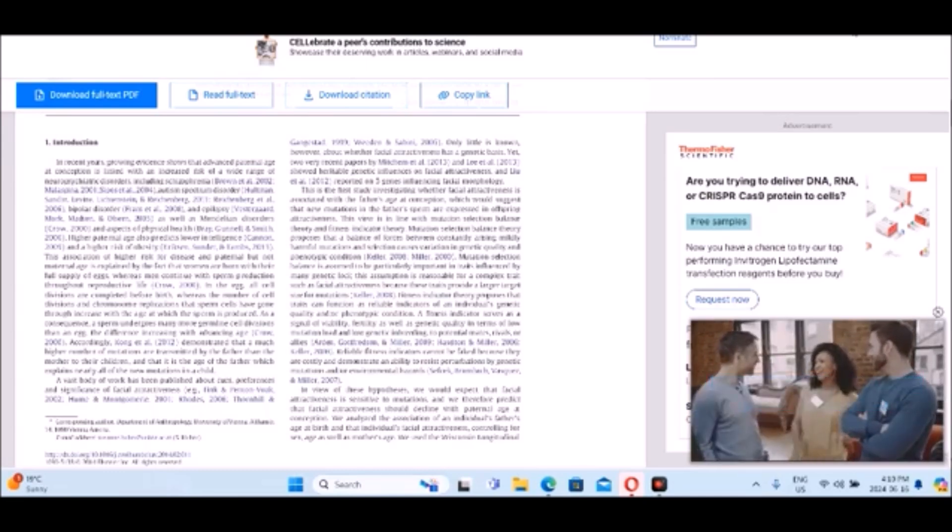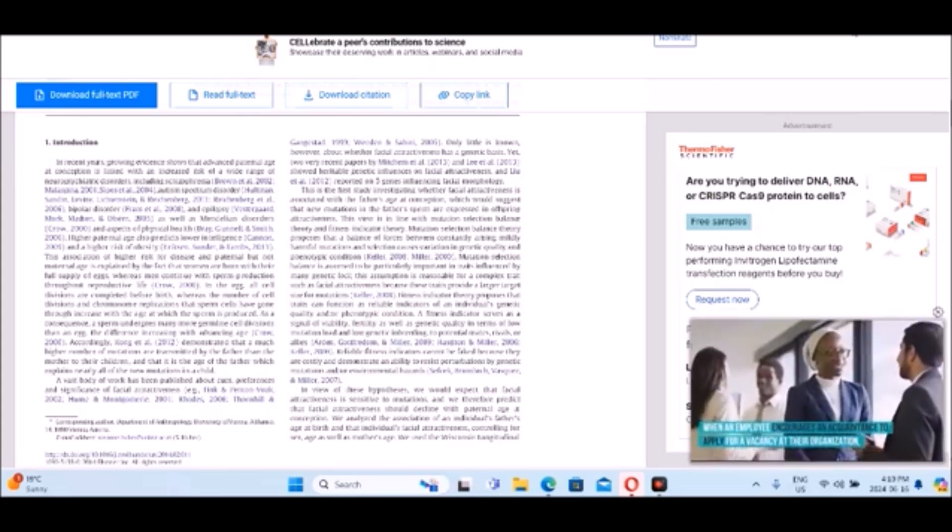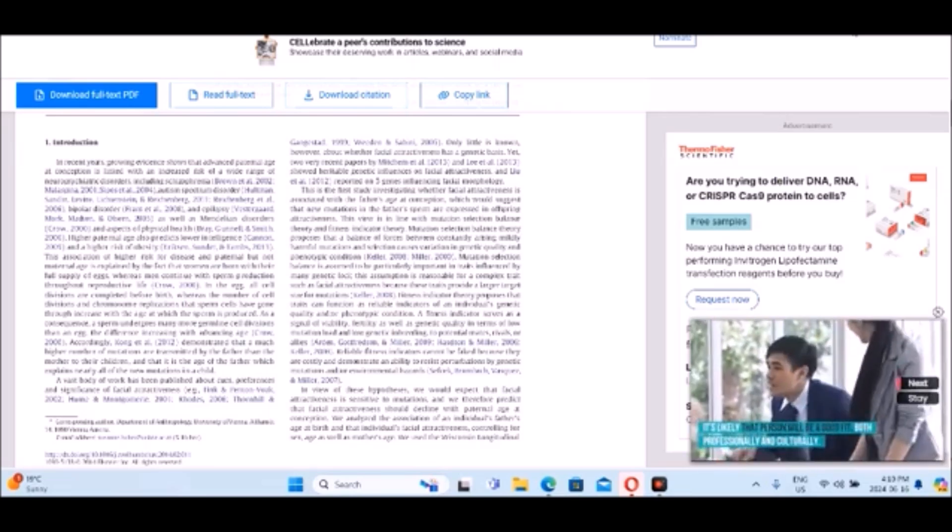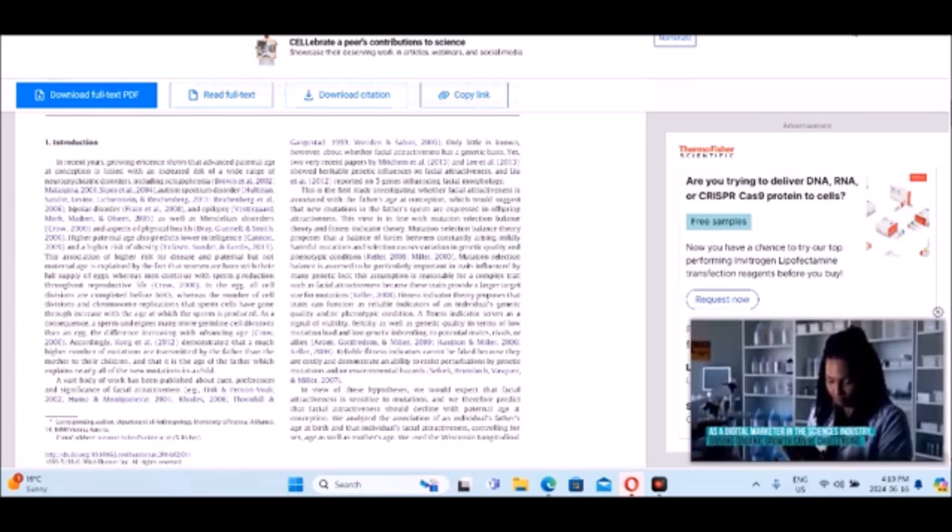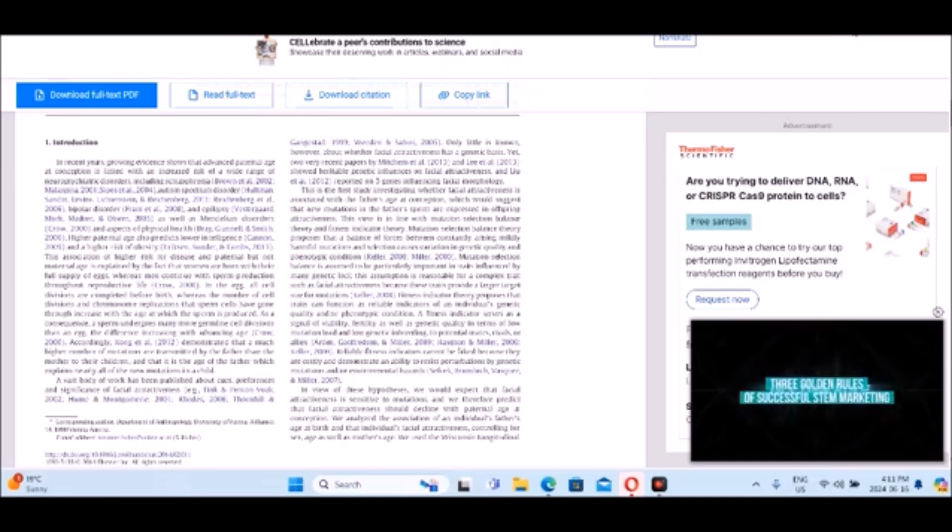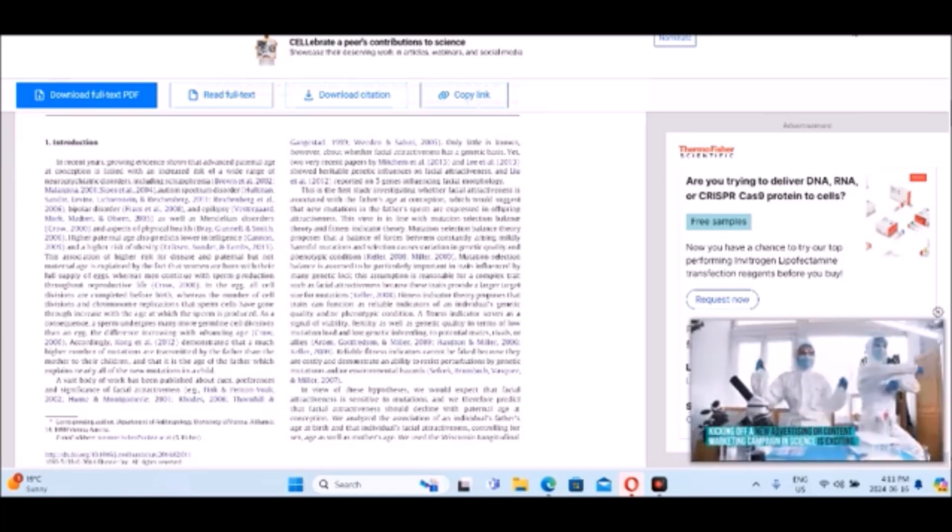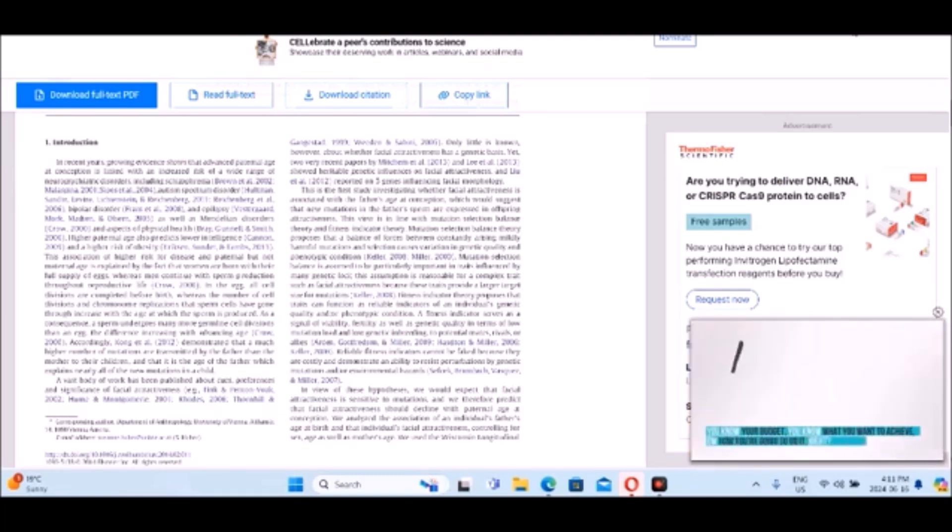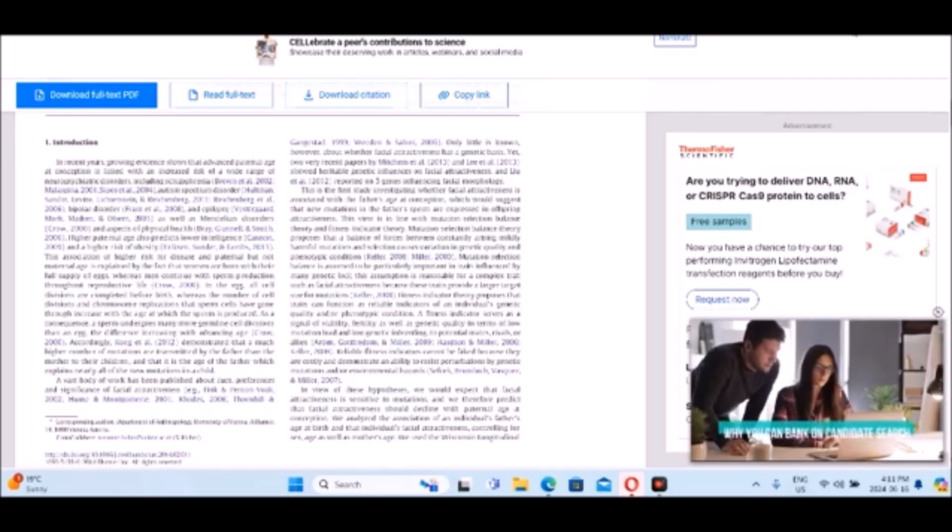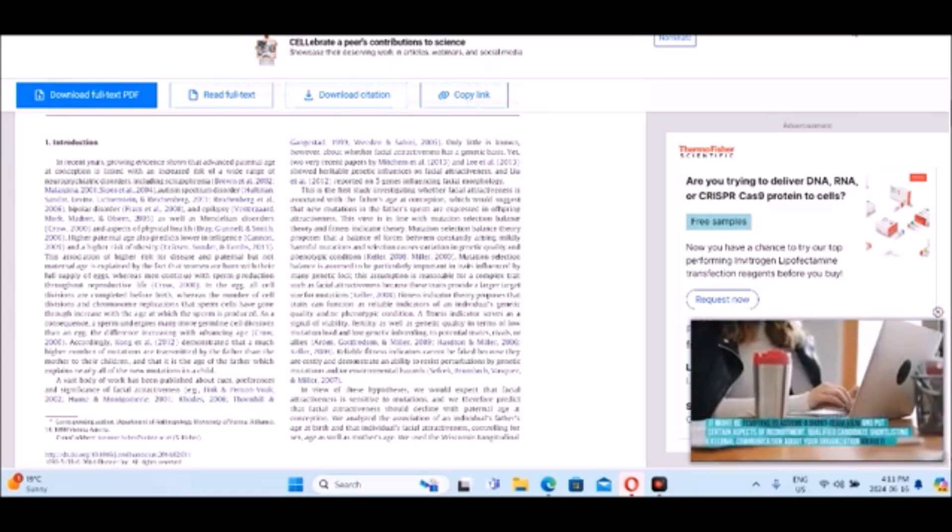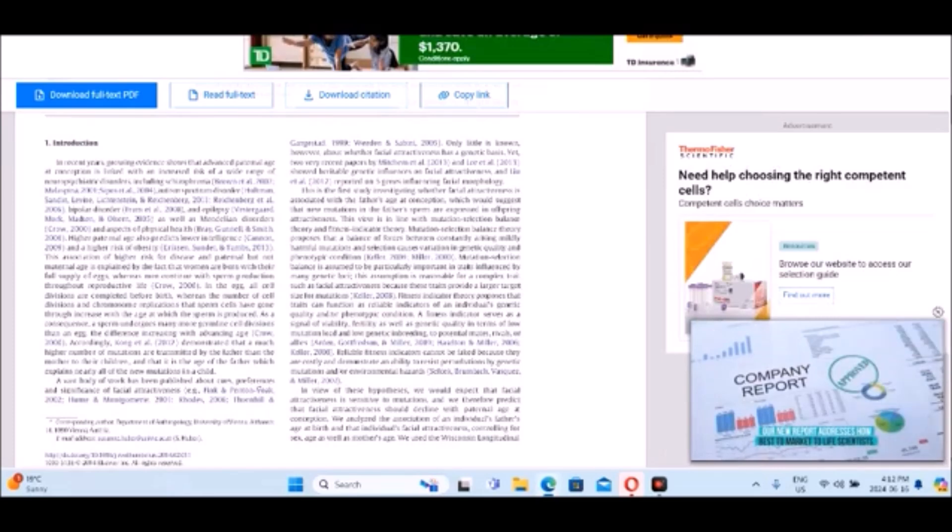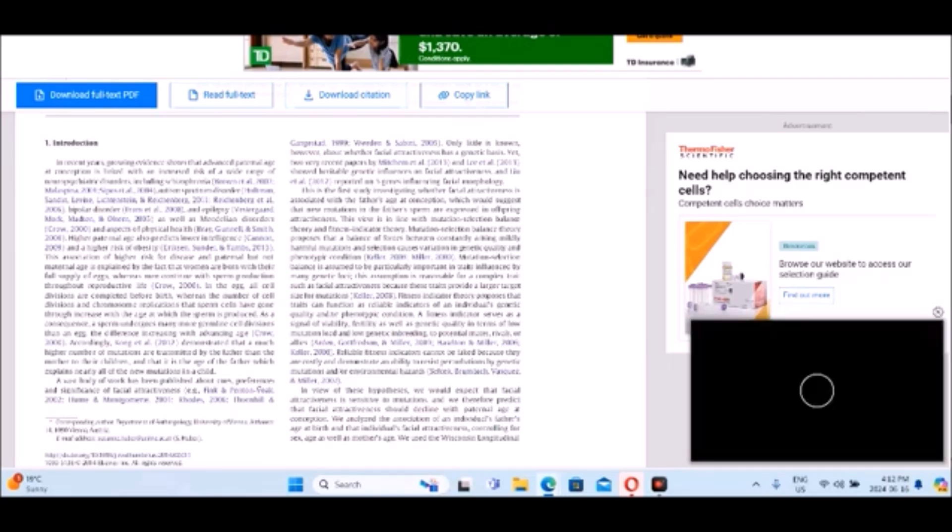It says in recent years, growing evidence shows that advanced parental age at conception is linked with increased risk of a wide range of neuropsychiatric disorders, including schizophrenia, autism disorder, epilepsy, bipolar disorder, as well as physical health. Higher parental age also predicts lower intelligence and a higher risk of obesity. This association of higher risk for disease and paternal, but not maternal age is explained by the fact that women are born with their full supply of eggs, whereas men continue with sperm production throughout reproductive life. In the egg, all cell divisions are complete before birth, whereas the number of cell divisions and chromosome replications that sperm cells have gone through increase with age. As men's sperm ages, and the more they age, they replicate. And with every replication, there's a chance for mutation.